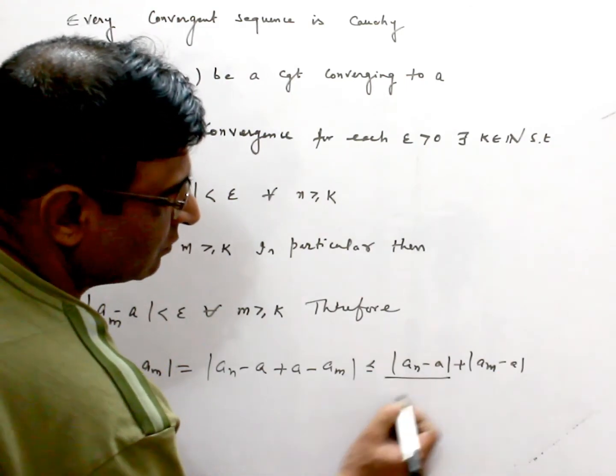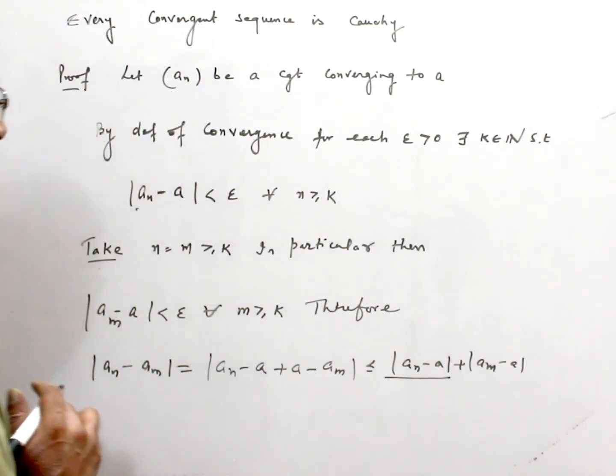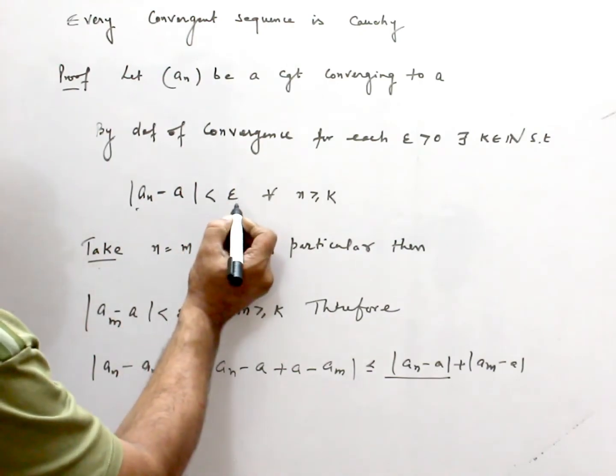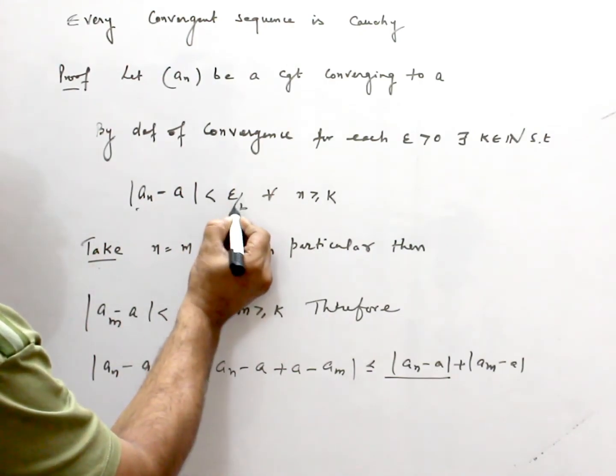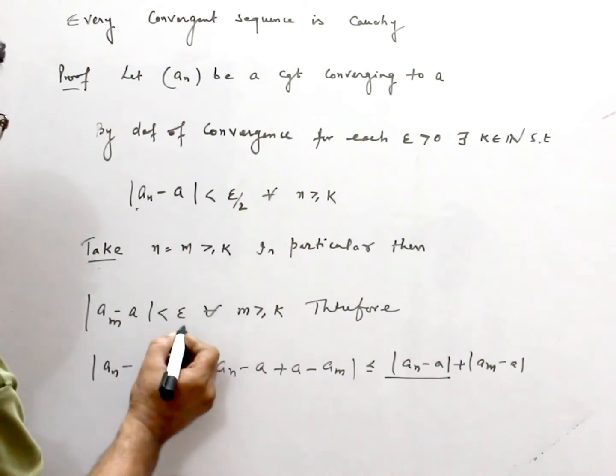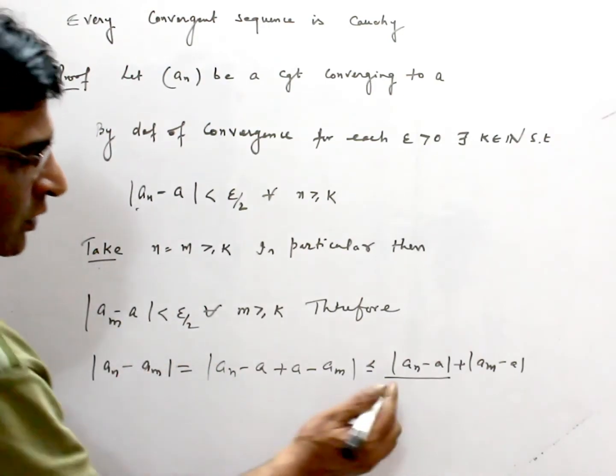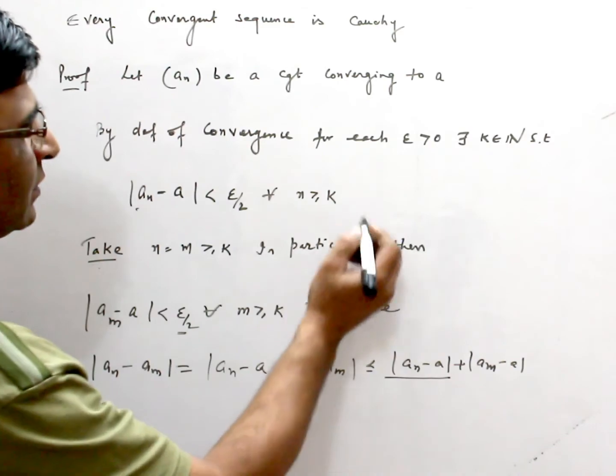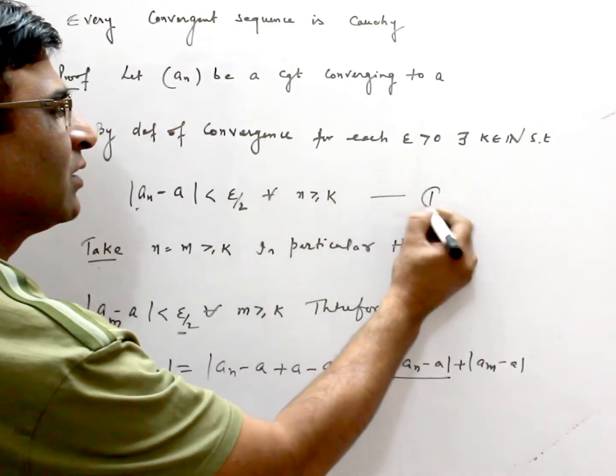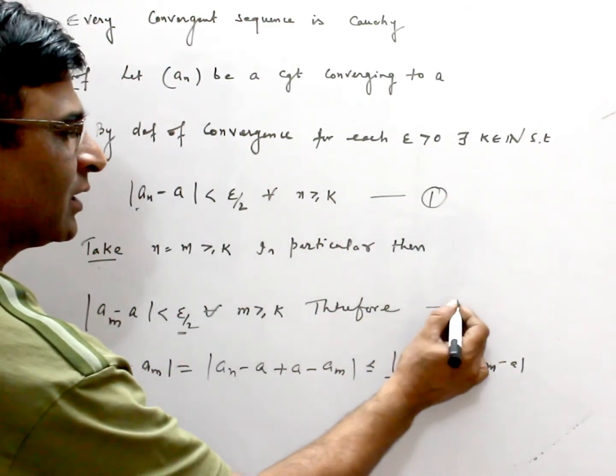This is epsilon. Now one more modification: I take epsilon by 2, which will not make a difference, it's slightly more restrictive. So this becomes ε/2. I label this as (1) and this as (2).